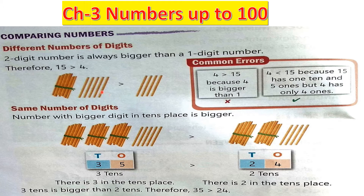Compared to chapter 2, the process is the same. We all know that the open mouth always faces towards the greater number. A two-digit number is always bigger than a one-digit number. Therefore, 15 is bigger than 4.